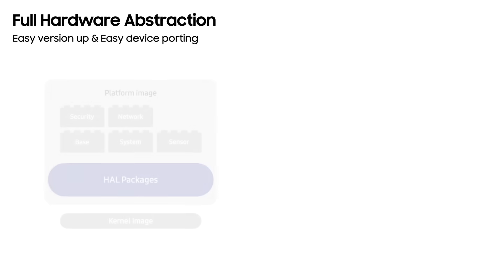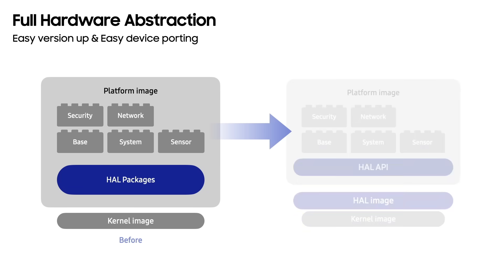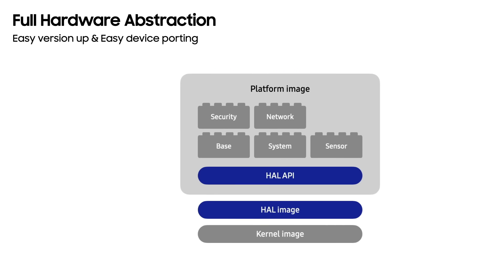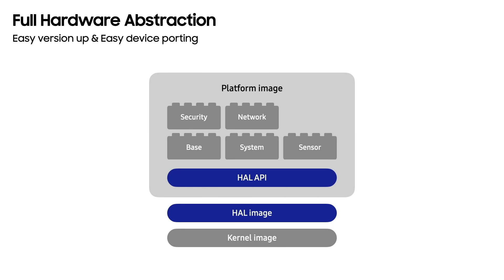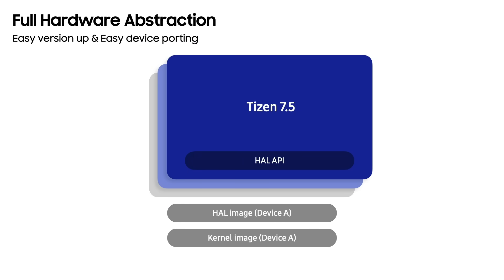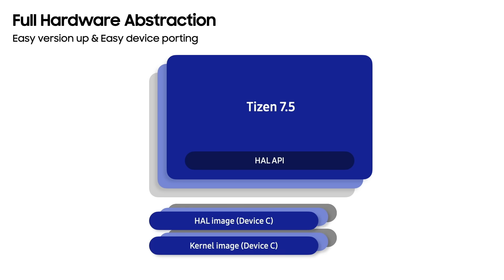The internal structure of the platform image has been improved by completely separating the hardware-dependent implementations. It offers a new independently maintainable structure. This new image system makes it possible to upgrade only the platform part. Conversely, when migrating to a new device, it is possible to upgrade only the hull and kernel area independently. This can dramatically reduce the product development cost.